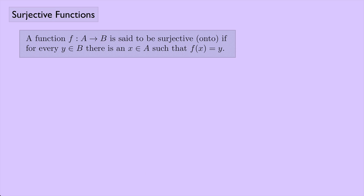Here's the definition. A function f from a set A to a set B is said to be surjective, or onto, if for every element y in the set B, there is an element x in the set A such that f of x equals y. Let's look at an example.